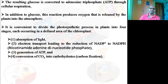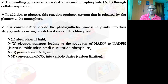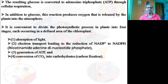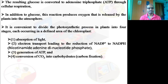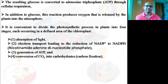The resulting glucose is converted into adenosine triphosphate (ATP) through cellular respiration. In addition to glucose, this reaction also produces oxygen that is released by the plants into the atmosphere — that is the major plus point of photosynthesis.